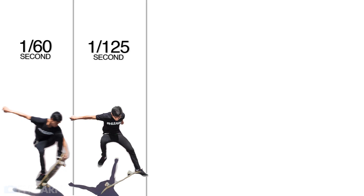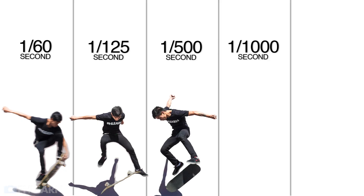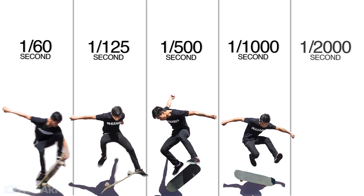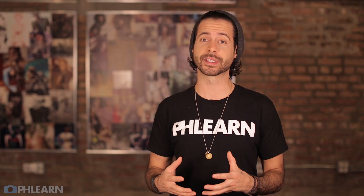Here you can see the progression of shutter speeds — as we get faster and faster we're seeing less and less blur with each shot. That's how we freeze motion using shutter speed. Now, what happens if you can't shoot outside or if it's dark and there's not enough light? In our next episode we're going to show you how to do the same thing — freezing motion indoors using strobes.